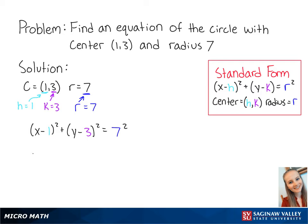This can be simplified as (x - 1)² + (y - 3)² = 49. And this is the final answer.